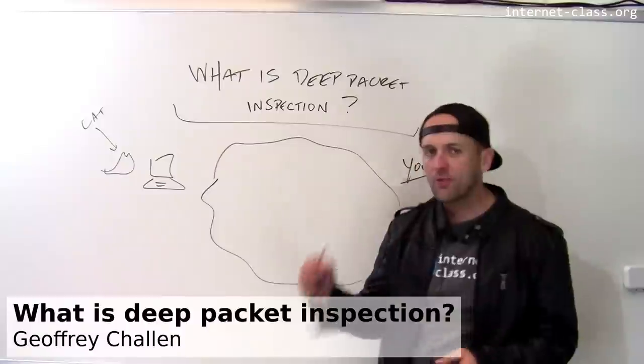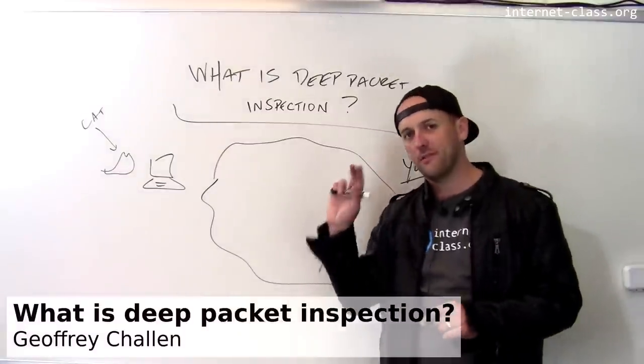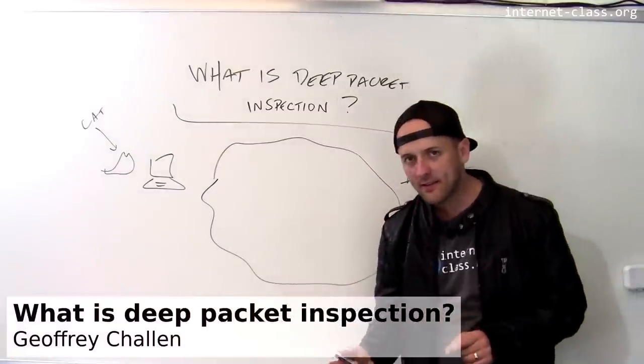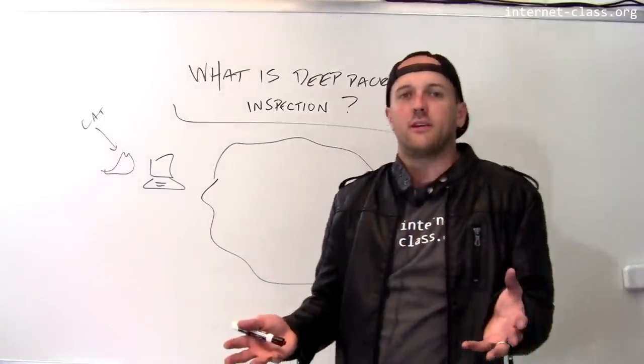Routers along the internet are only supposed to look at the destination address of the packet. That is the most efficient way to route packets, it's the fastest way, and that's what the IP protocol is designed to do.